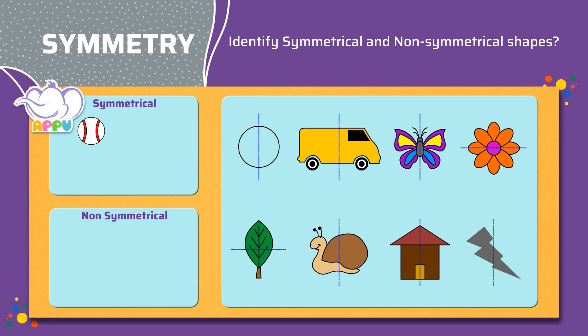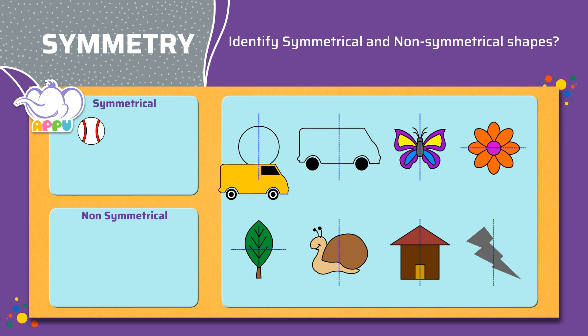Is this van symmetrical along the dotted line? No. When we fold it along the dotted line, we don't get two equal halves. So this van is non-symmetrical. Let's place it here.